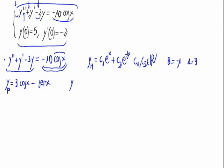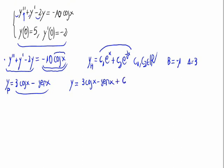So the general solution for the equation is the particular solution plus the homogeneous solution: y = 3·cos(x) - sin(x) + c₁·e^x + c₂·e^(-2x).